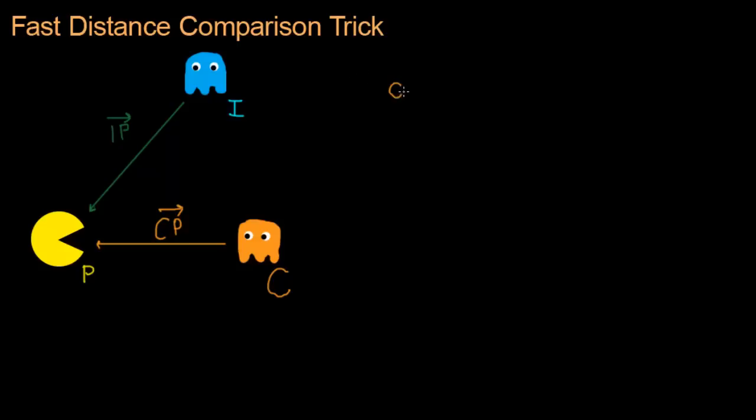So the length of CP, or the magnitude of CP, we're going to compare that to the length, or magnitude, of IP. So we're going to figure out who is bigger. This symbol just means we don't know. It could be CP that's bigger, it could be IP that's bigger. We have no idea.